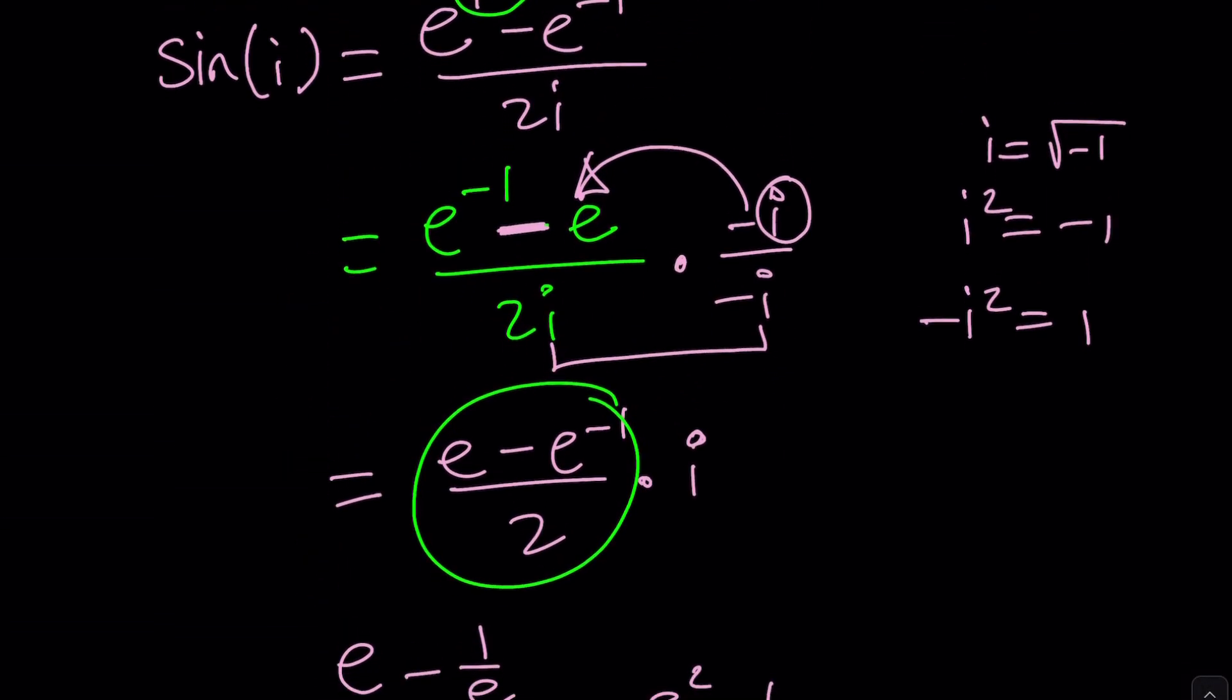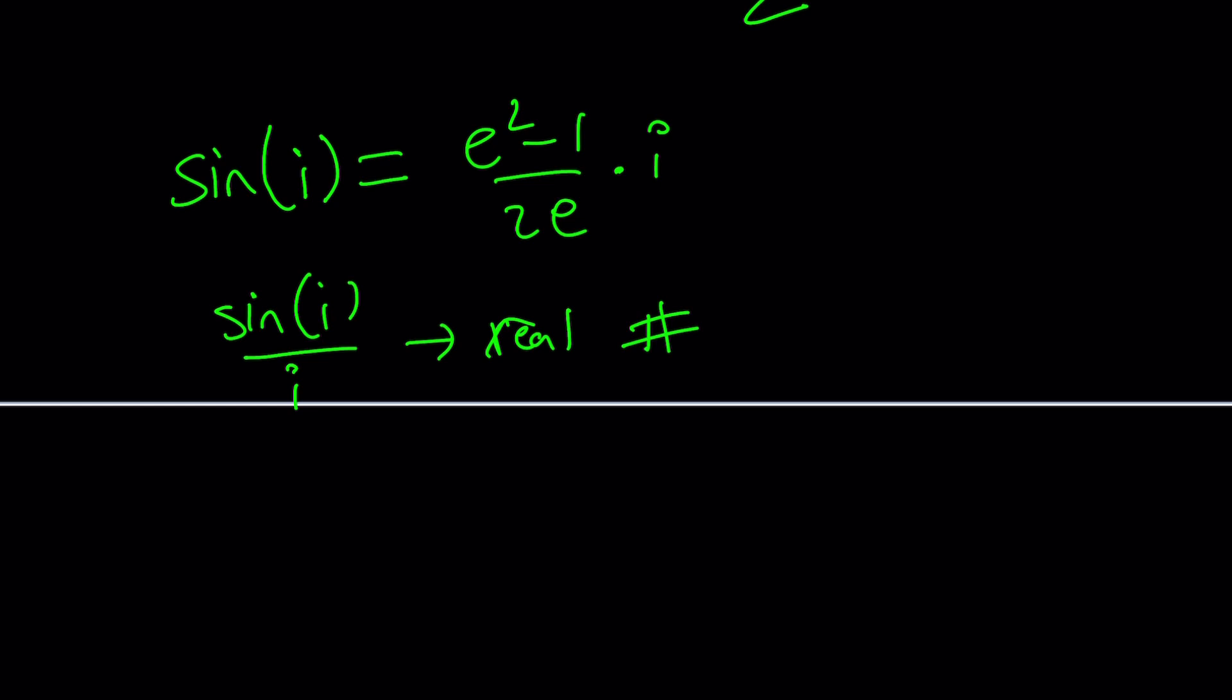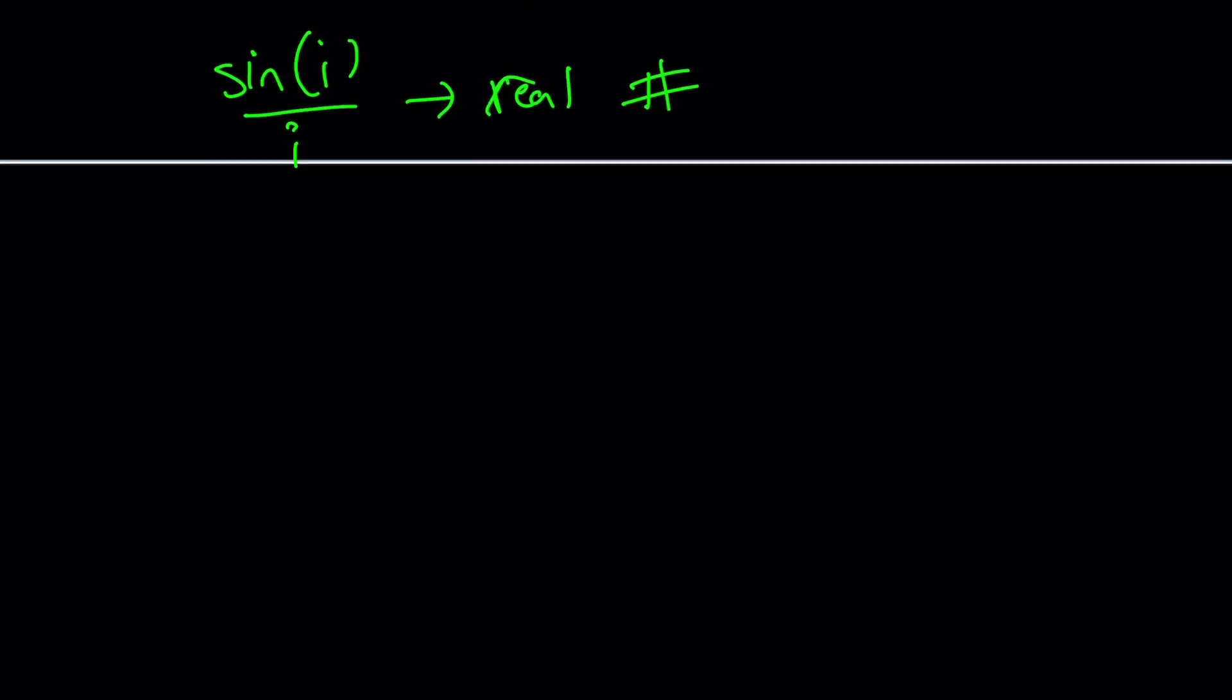Since sine of i is a multiple of i, in other words an imaginary number, let's write this one more time. Sine of i can be written as e squared minus 1 over 2e multiplied by i. Sine of i divided by i is actually a real number. Isn't that interesting? I think so. And there's definitely a name for it. That's what we're going to talk about. And that is given in Wolfram Alpha, so I'm not going to repeat it. But before that, let me go ahead and show you some of the interesting ways to express it, which were given by Wolfram Alpha. But where do they come from? That's for you to find out.